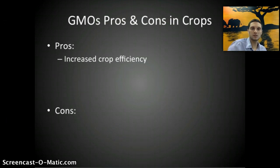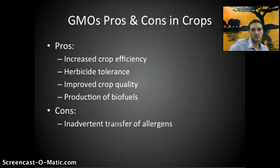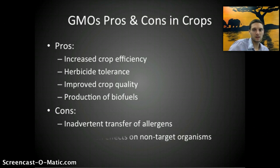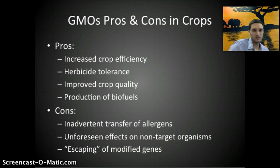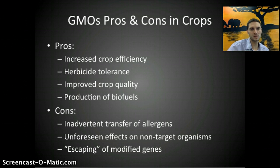There are lots of pros and cons to the use of GMOs in crops specifically. Pros include a potential for increased crop efficiency, herbicide tolerance, improved crop quality, and the production of biofuels. Potential cons include inadvertent transfer of allergens, unforeseen effects on non-target organisms, and the escaping of modified genes. We've actually seen this happen here in Oregon, where modified genes planted in one field have been found in other fields of the same or different species. We also don't really know what long-term effects GMOs have on our health or on the environment, since they haven't been around that long.